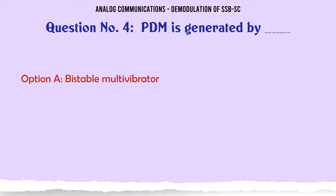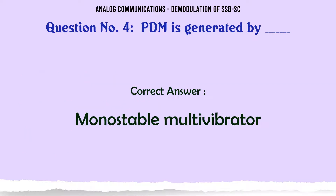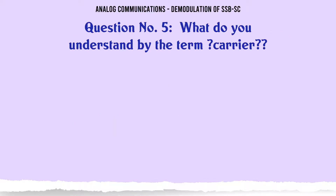PDM is generated by: A. Bistable multivibrator, B. Monostable multivibrator, C. Astable multivibrator, D. Schmitt trigger. The correct answer is monostable multivibrator.